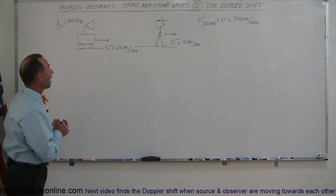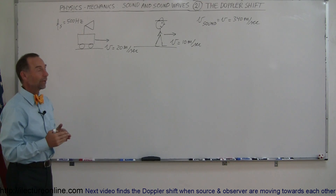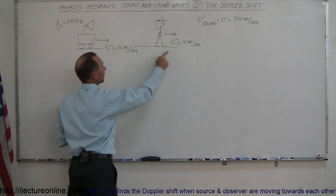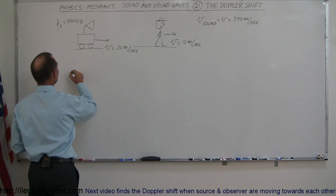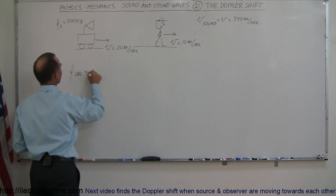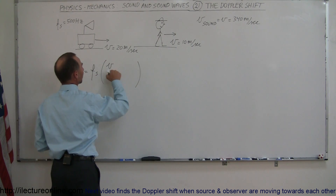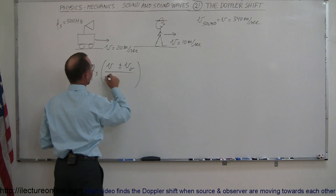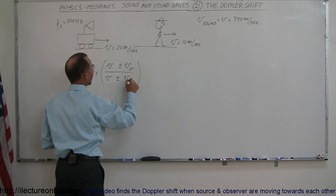In our next example, we're going to have both the source and the observer moving. They're moving in the same direction, although the source is moving faster than the observer. We use the same equation: the frequency observed is equal to the frequency of the source times the ratio of the velocity of sound in air plus or minus the velocity of the observer, divided by the velocity of sound in air plus or minus the velocity of the source.